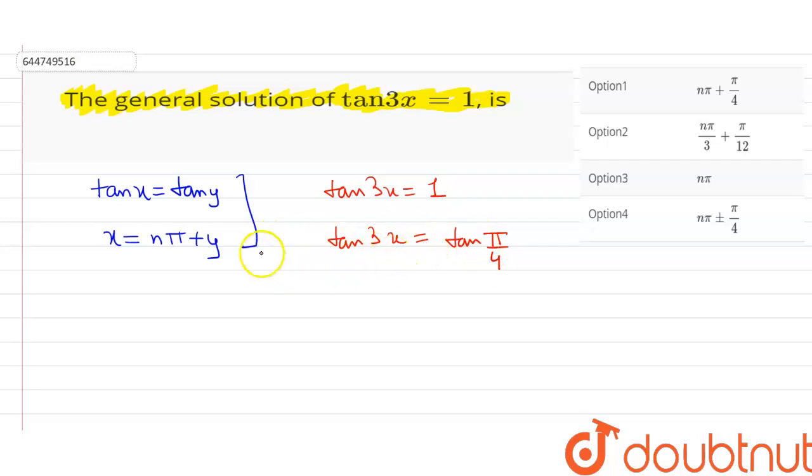If we divide this whole equation by 3, x equals nπ/3 plus π/12. This is the general solution for the equation tan(3x) = 1. So option number 2, nπ/3 + π/12, is the correct answer.